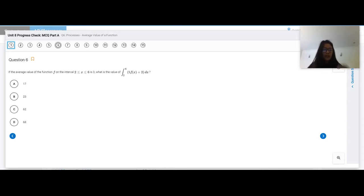So the question states, if the average value of the function F on the interval from two to six is three, what is the value of the integral from two to six of five times F of X plus two DX?